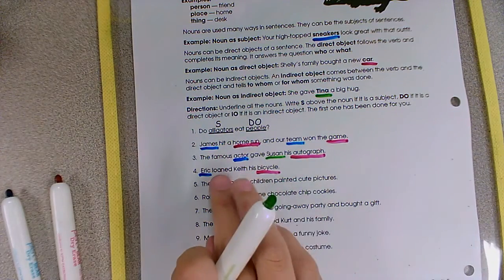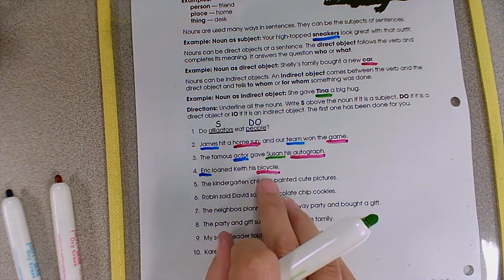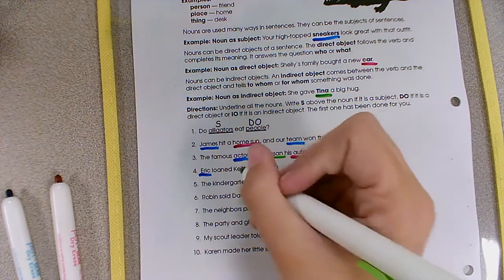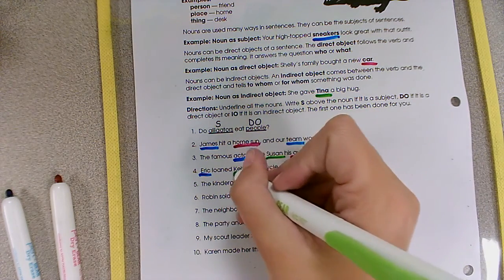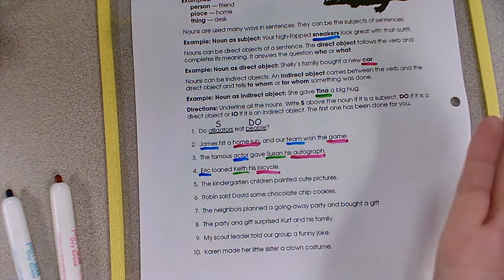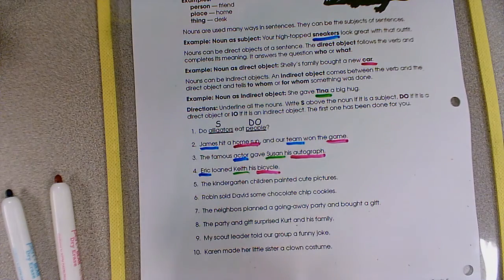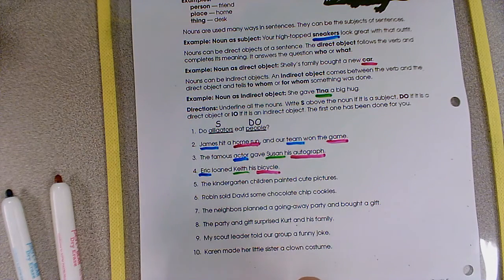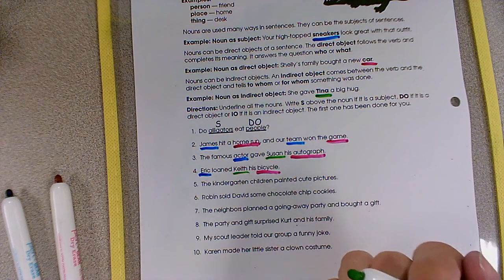Now there's a noun that comes in between the verb and the direct object. And that's Keith. That noun tells us who received the object, or to whom this verb was being done. Eric loaned his bicycle. He loaned it to Keith.